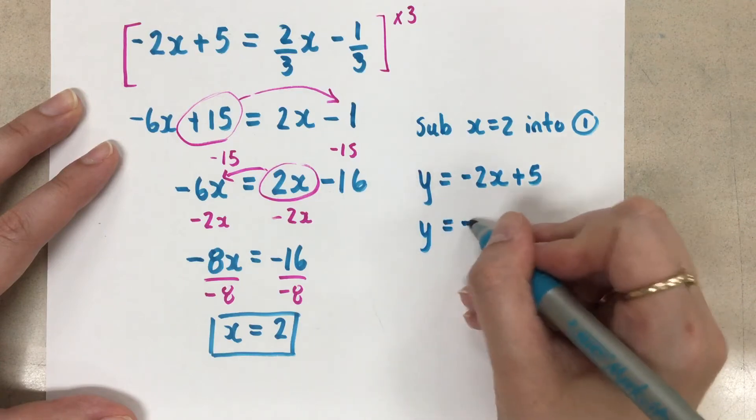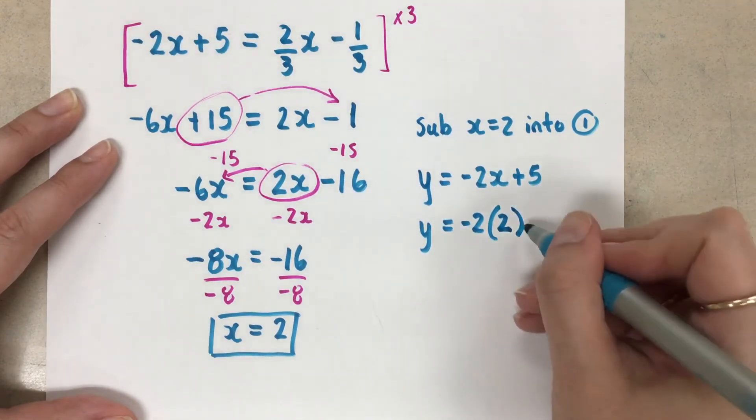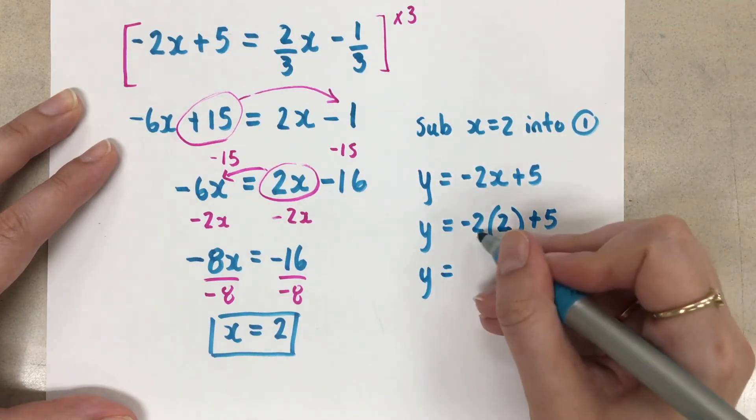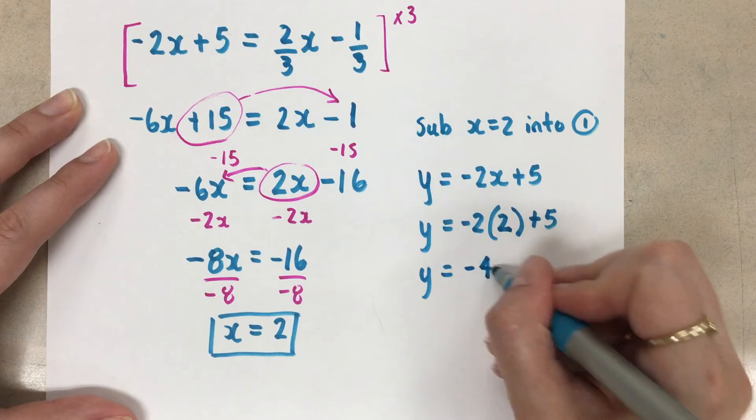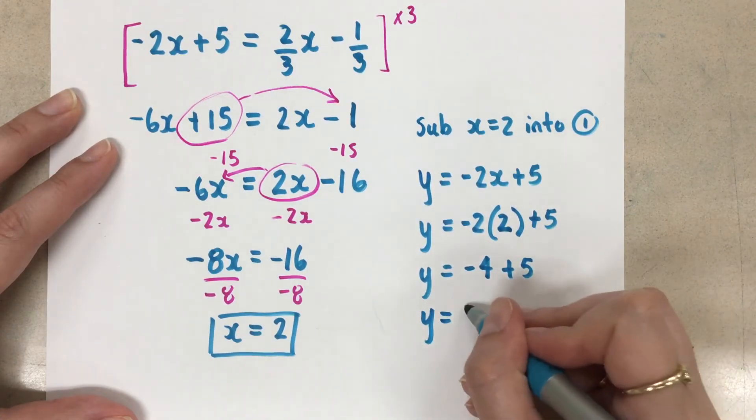So we have y equals negative 2x plus 5. Y equals negative 2, the x is 2. So there's my subbing in plus 5. Y equals negative 2 times 2 is negative 4, plus 5. So our y coordinate is positive 1.